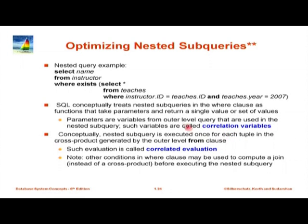Correlated evaluation can be horrendously expensive if, for example, there is no index on teachers.id. Each time I evaluate this, I may have to scan through the entire teachers relation to find which tuples match the current instructor.id and year 2007. Without any indices, I will scan teachers repeatedly — it is horribly inefficient. That is just the semantics; SQL does not say you should actually do it that way.